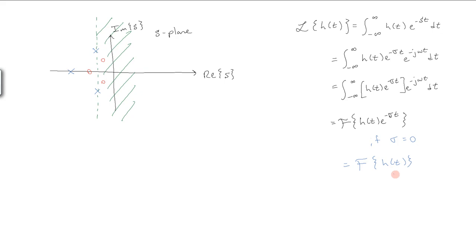And so if the Laplace transform is convergent for every value on the imaginary axis, that means that the Fourier transform of h of t exists, and is in fact nothing more than the Laplace transform evaluated at values of s equal to j omega, when sigma is equal to zero.